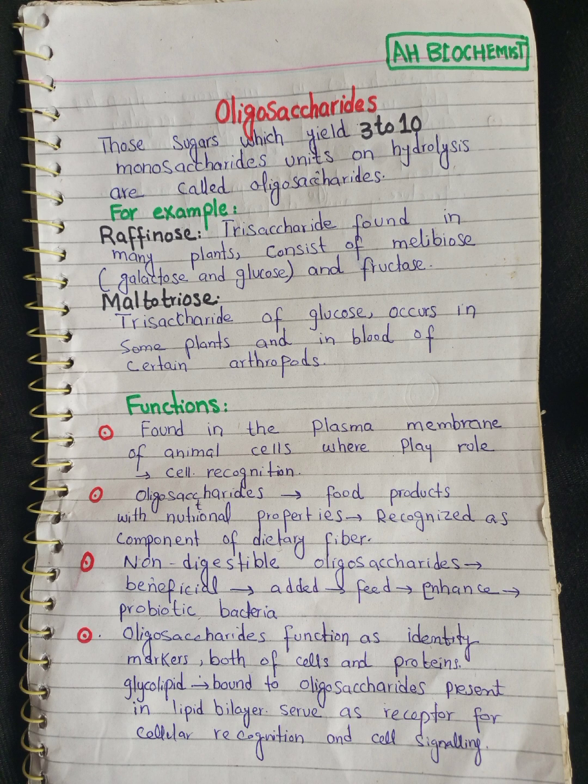Raffinose consists of melibiose and fructose, where melibiose itself consists of galactose and glucose. Maltotriose is a trisaccharide of glucose molecules; it occurs in some plants and in the blood of certain arthropods.